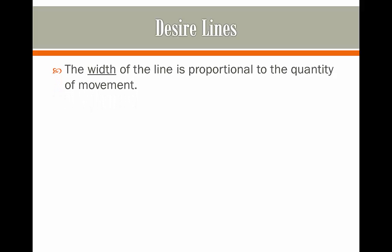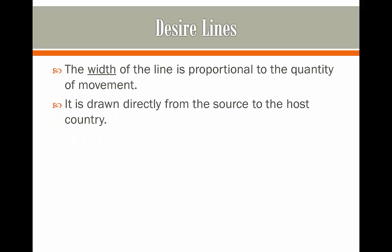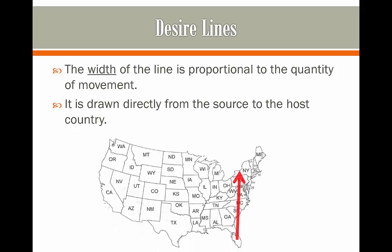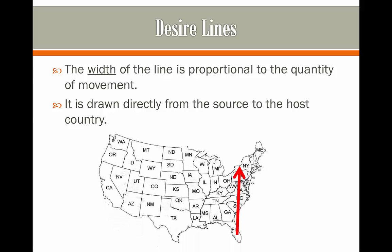Next up is desire lines. This is where the width of the line is proportional to the quantity of movement, however it's not drawn along the route — instead it is drawn directly from the source to the host country, or in this case state. So we still have our proportionate line but it goes straight from Orlando to New York and it's not following any particular route.